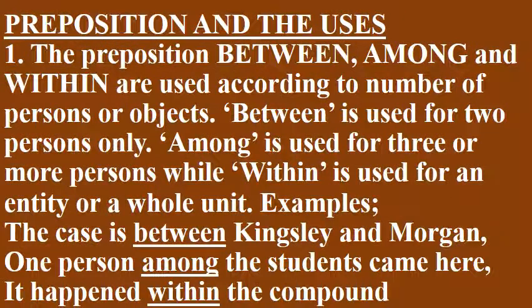Preposition and the Uses. 1. The prepositions between, among, and within are used according to the number of persons or objects. Between is used for two persons only. Among is used for three or more persons, while within is used for an entity or a whole unit. Examples: The case between Kingsley and Morgan. One person among the students came here. It happened within the compound.